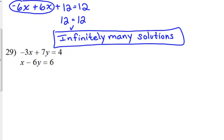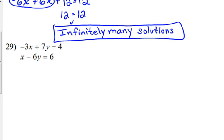Let's look at number 29. It does not begin with one of our equations solved for one of the variables, however it is very easy to solve one of those equations for one of the variables. Which equation is easily solvable? The bottom one. Which variable should we solve? x, because the only thing we have to do is add the 6y to the other side.